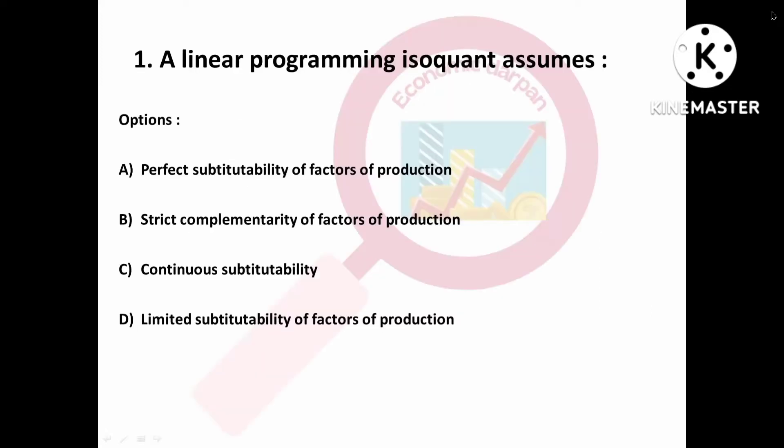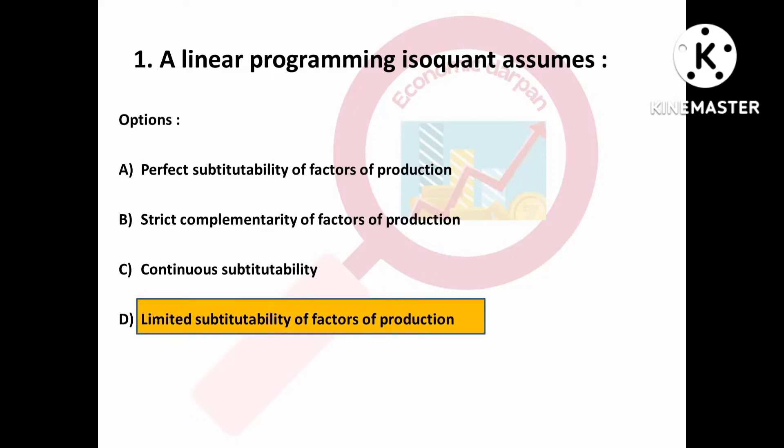First question is: a linear programming isoquant assumes — Option A: perfect substitutability of factors of production; Option B: strict complementarity of factors of production; Option C: continuous substitutability; Option D: limited substitutability of factors of production. A linear programming isoquant assumes limited substitutability of factors of production.